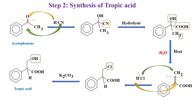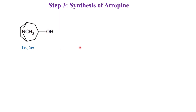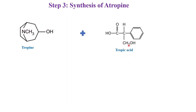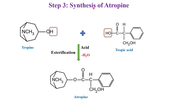Third step is synthesis of atropine. From step 1 we got tropine, and from step 2 we got tropic acid. Tropine plus tropic acid undergoes esterification in the presence of acid. On esterification, H from tropine combines with OH from tropic acid and is removed as one molecule of water. The left group adds to the oxygen and we are getting atropine. So step 3 is synthesis of atropine: tropine plus tropic acid undergoes esterification and one molecule of water is removed, giving the ester compound atropine.